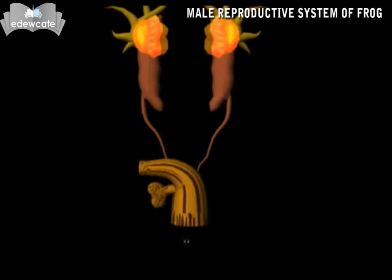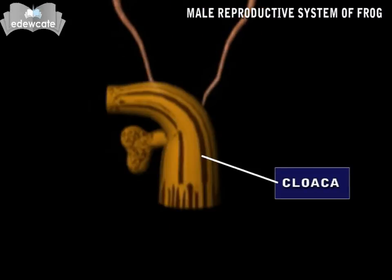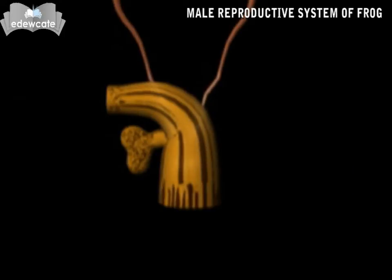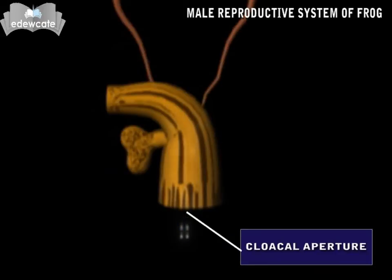The cloaca chamber is a common chamber for the passage of spermatozoa, urine, and feces, or undigested food. It opens to the outside through the cloacal aperture.